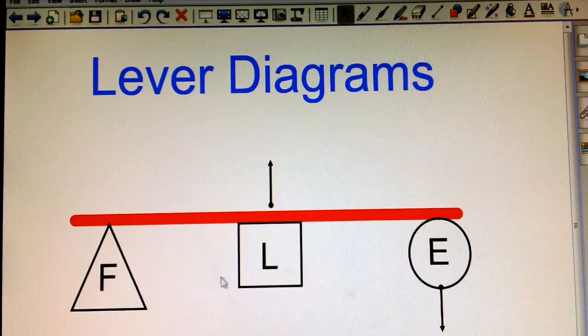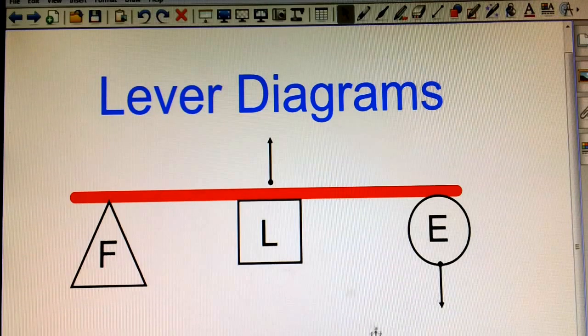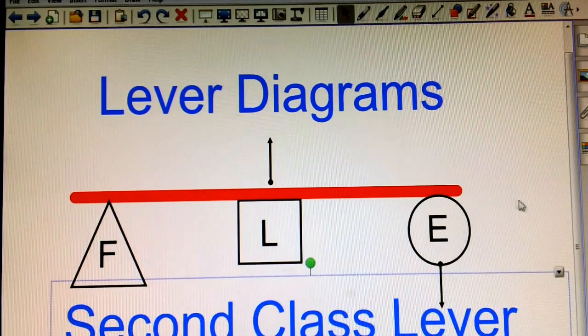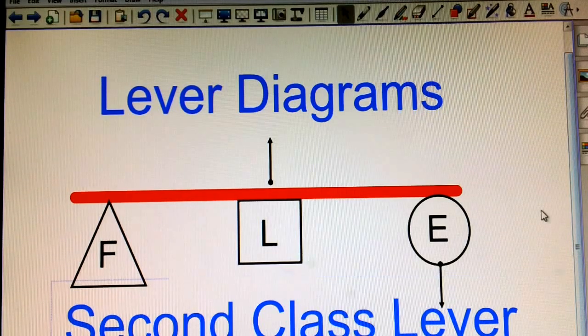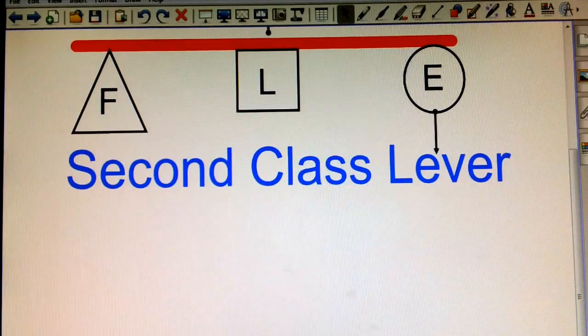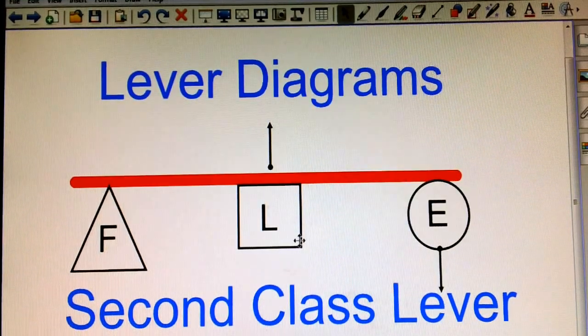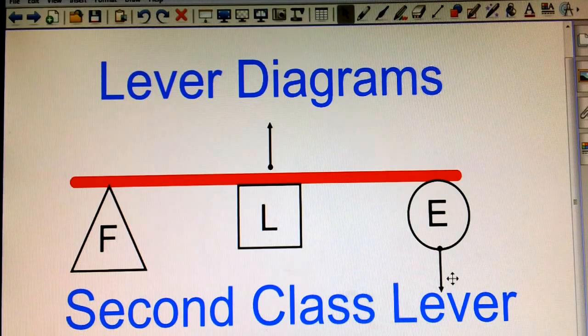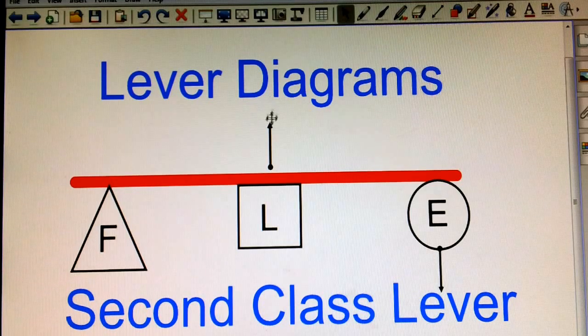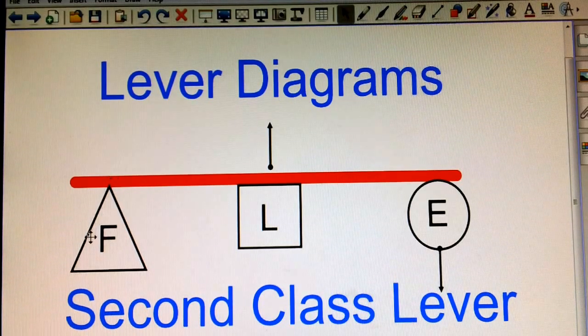In a second class lever, you'll see that the load is in the middle. And the fulcrum and the effort are on either side. So this is a second class lever. We know it's a second class lever because the load's in the center. On a second class lever, we still apply the effort going downward.